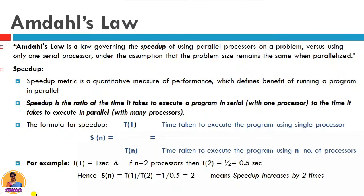Before we understand Amdahl's Law, suppose there are three girls: Rhea, Sanya, and Seema, and all three are told to reach the shop at 7 o'clock. Rhea comes by car, Sanya comes by bus, and Seema comes by walking. At 7 o'clock, Rhea and Sanya will reach on time, but Seema will not, and both will have to wait for her.